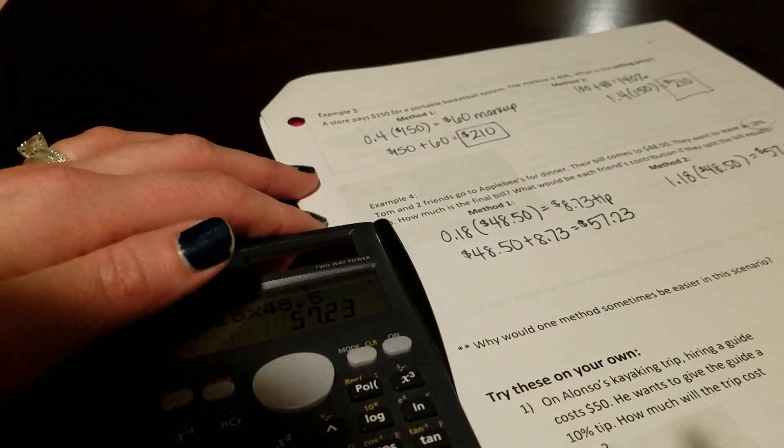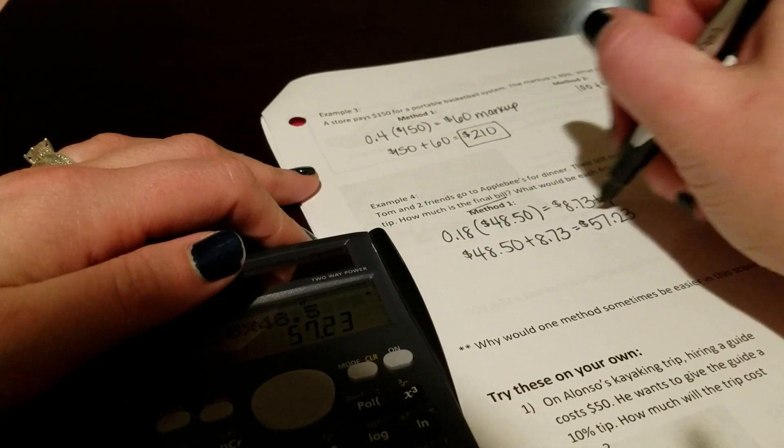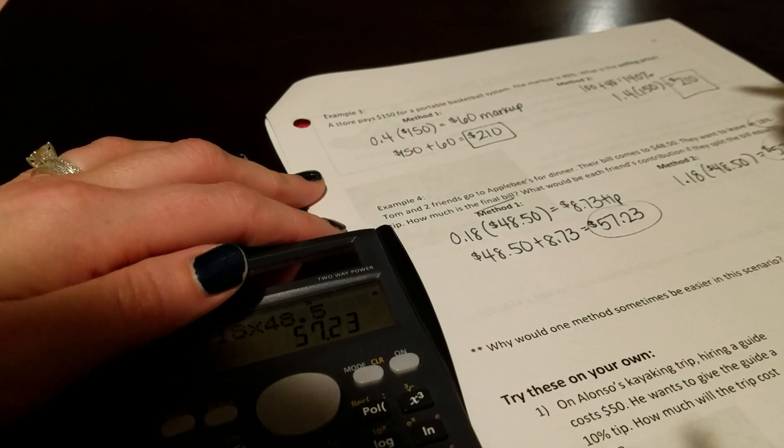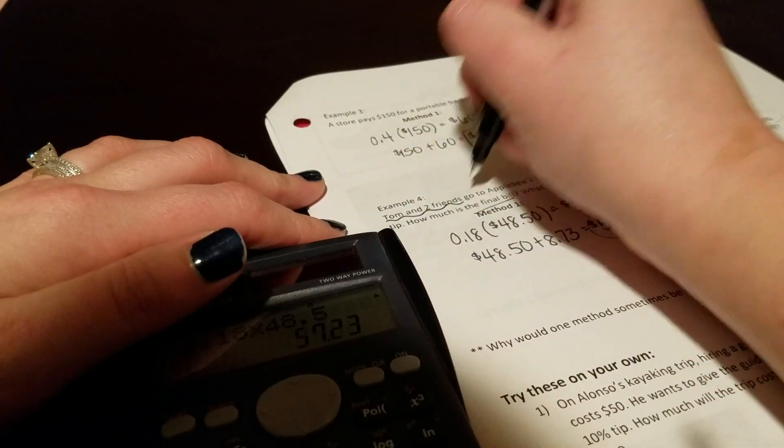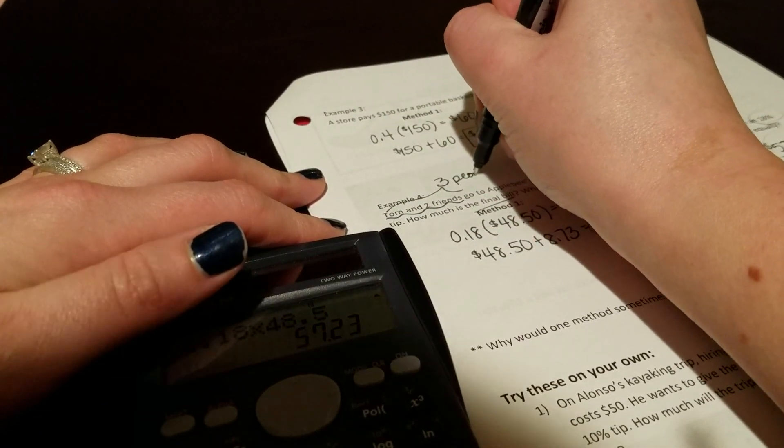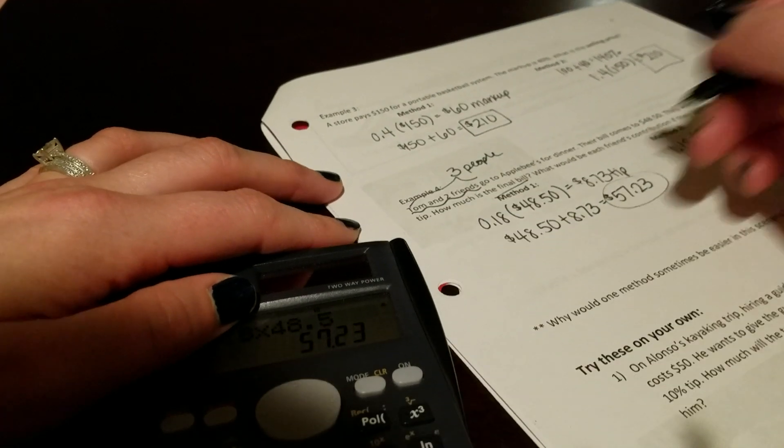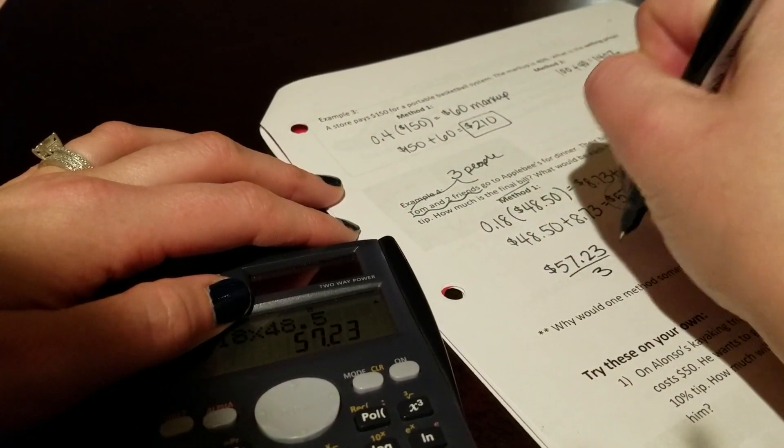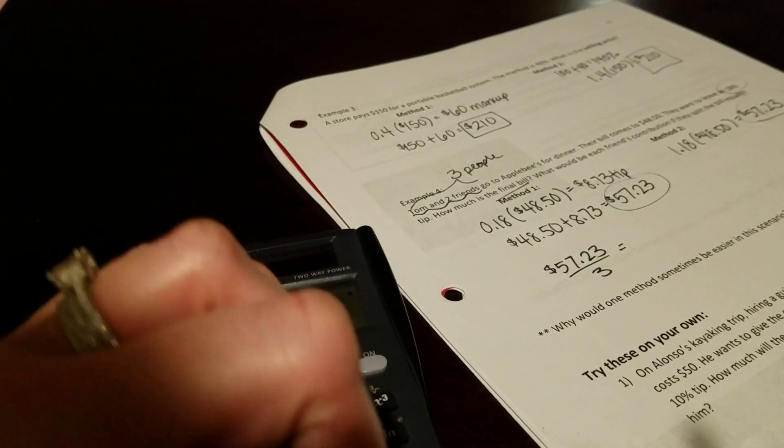Now the only problem is we're not done. That's part one. How much is the final bill? And then it says what would each friend's contribution be if they split it equally? So you have to realize it's Tom and two friends, which really means there are three people.